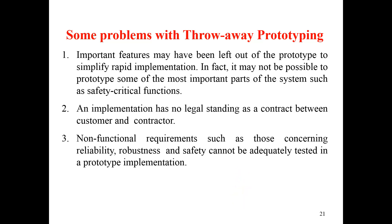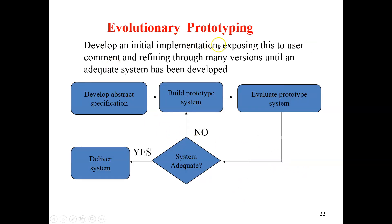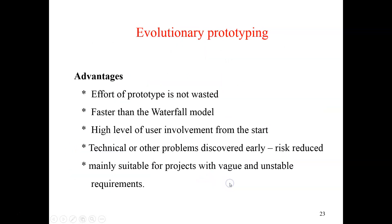Evolutionary prototyping: develop an initial implementation, then after finalizing the requirements you implement the prototype into the system. You develop an abstract specification, build the prototype system, evaluate it — if the system is adequate, you deliver it; if not, you change the system and repeat. Advantages: effort is not wasted because the prototype is evolved into the system. This is faster than the waterfall model, has a high level of user involvement from the start, and technical or other problems — including risks — can be identified early. This is suitable for vague and unstable requirements.